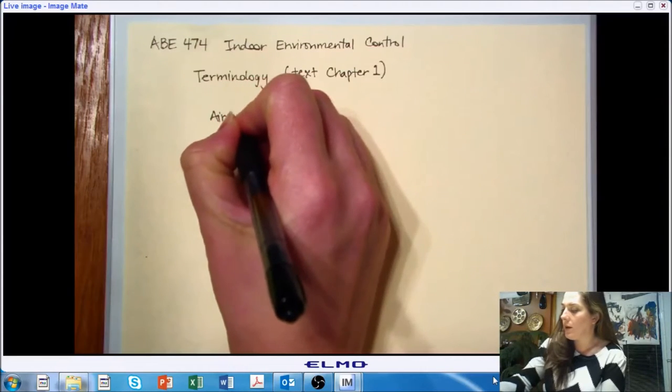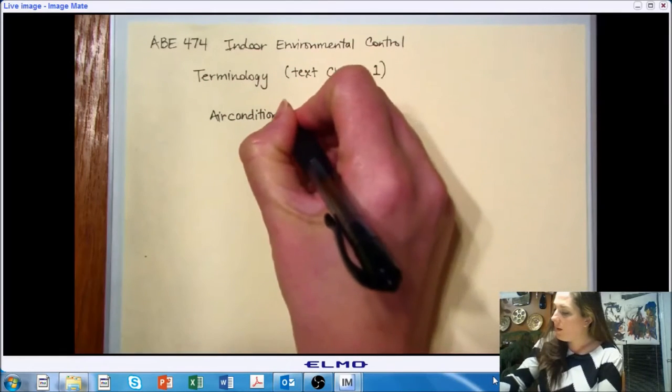So to start, let's think about the term air conditioning and what we mean when we're talking about air conditioning. When you hear the phrase air conditioning, it's referring to the control of different properties of the air inside our environment. So we could be controlling temperature.